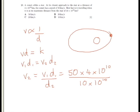Now, straight away, we can cancel our 10 to the power of 10s. Now, we can cancel these zeros, so we're left with v2 equals 5 times 4, divided by 1. So, that's 20 kilometers per second. Answer C.